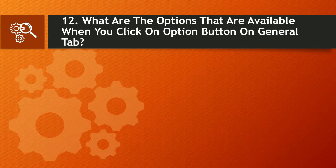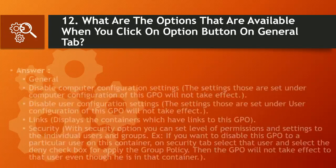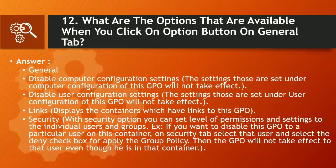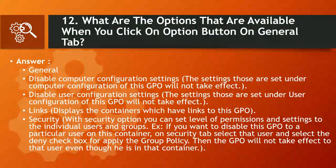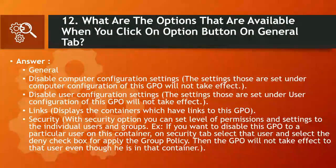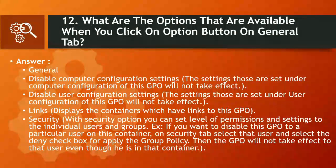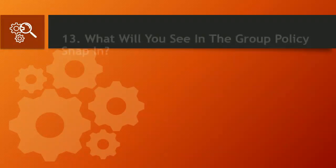Question 12: What are the options available when you click the Options button on the General tab? Answer: Disable Computer Configuration Settings — settings under computer configuration of this GPO will not take effect. Disable User Configuration Settings — settings under user configuration of this GPO will not take effect. Links — displays containers which have links to this GPO. Security — with the security option you can set level of permissions to individual users and groups. If you want to disable this GPO for a particular user, on the Security tab select that user and check the Deny checkbox for Apply Group Policy — the GPO will not apply to that user even though they are in that container.